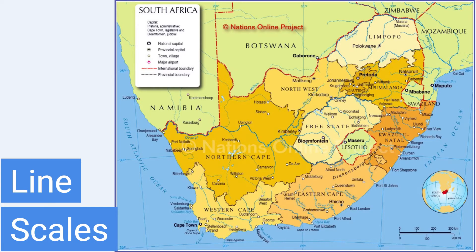Let's say you measured 15 centimeters on the map with your ruler, and the line scale says that one centimeter is equal to 10 kilometers. That means you multiply 15 centimeters by 10 kilometers to find out the real distance between those two places. In this case, it would be 150 kilometers.